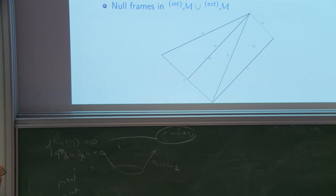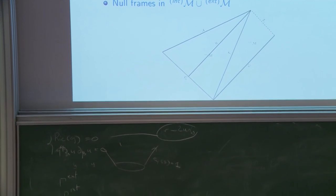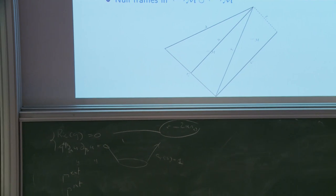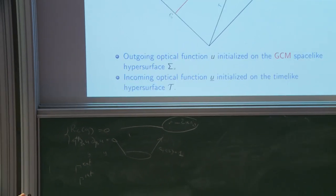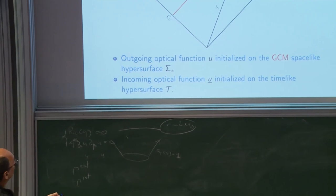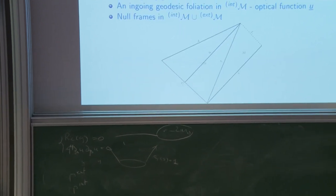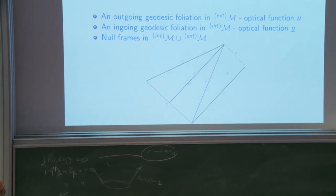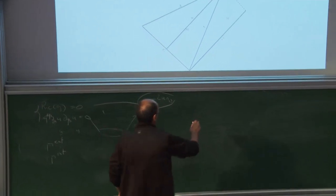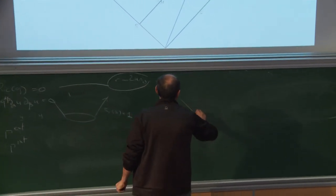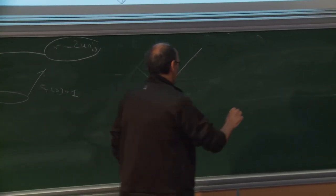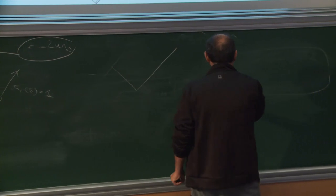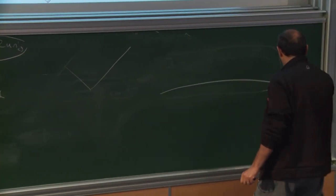The key features of the construction: the Hawking mass plays a fundamental role for defining the final mass. The Hawking mass is defined using trace chi and trace chi-bar. On any two-surface, r is the area radius — 4 pi r-squared equals the area of the corresponding two-surface. The Hawking mass is given by an integral on the corresponding surface involving trace chi and trace chi-bar.